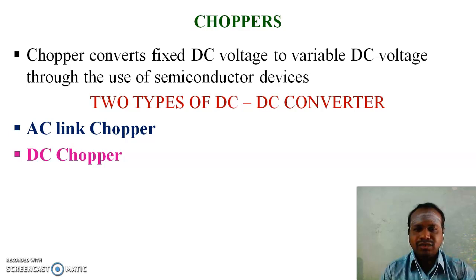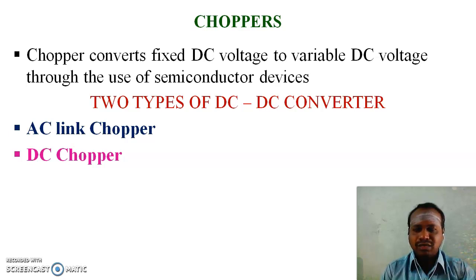Choppers convert fixed DC voltage to variable DC voltage through the use of semiconductor devices. There are two types of DC to DC converters: AC-linked chopper and DC-chopper.